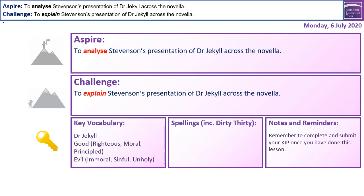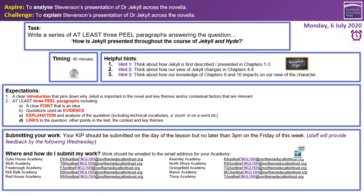In the bottom right box, we have a note and reminder for you to complete and submit your KIPP once you have done this lesson. What we'd like you to do is write a series of at least three PEEL paragraphs answering the question: how is Jekyll presented throughout the course of Jekyll and Hyde? The timing for this task is 45 minutes, and that 45 minutes is in addition to the amount of time it will take you to complete this lesson.